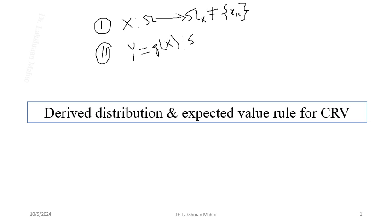G(X) is a function from Omega to Omega_Y, so we can't always claim Y is a continuous random variable. When Omega_Y is a discrete set, Y is a discrete random variable and will have a probability mass function.